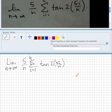So, we're taking the limit as n approaches infinity of 5 over n times the sum from i equals 1 to n of tan²(5i/n).